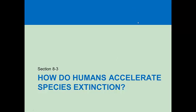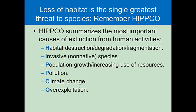How do humans accelerate species extinction? HIPCO — and this is going to be a major part of the exam from this chapter. HIPCO stands for: one, habitat destruction, degradation, and fragmentation; two, invasive and non-native species; three, population growth and increasing use of resources; four, pollution; five, climate change; six, over-exploitation.